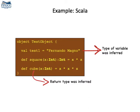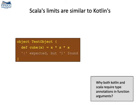Scala also can infer the type of variables from initializers. Scala can infer the return type of simple functions too. But again, there are limits to what the Scala compiler can do. For instance, it forces programmers to annotate the arguments of functions with type information just like Kotlin does.